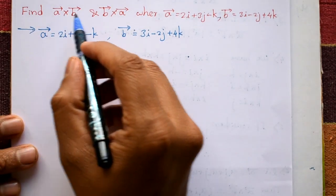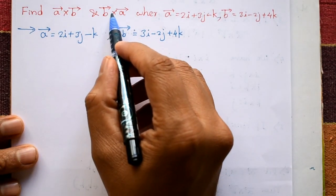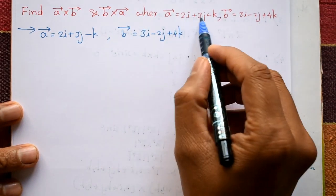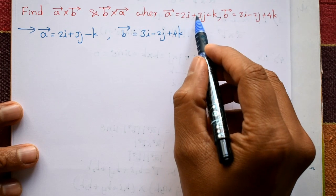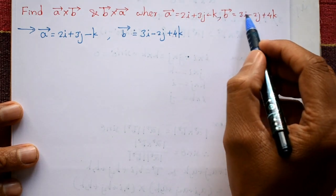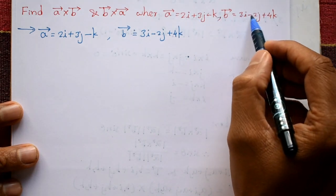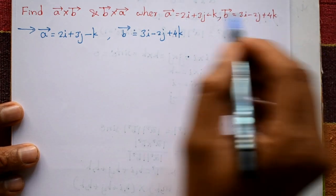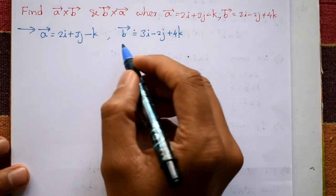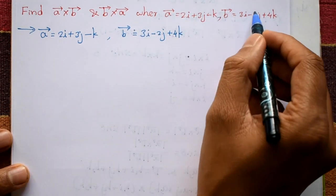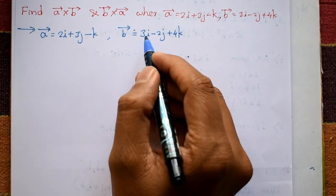Find vector a cross b and vector b cross a, where vector a is 2i plus 3j minus k, and vector b is 3i minus 2j plus 4k.